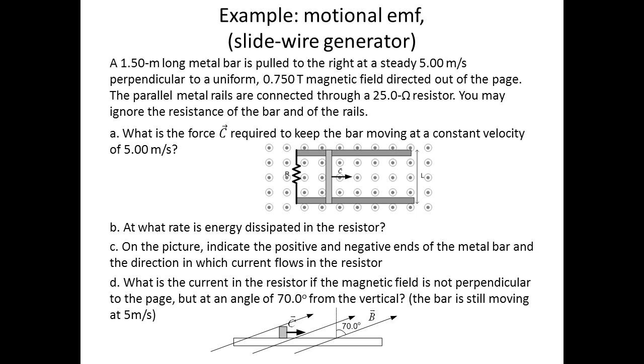On the picture, indicate the positive and negative ends of the metal bar and the direction in which current flows in the resistor. And what is the current in the resistor if the magnetic field is not perpendicular to the page but at an angle of 70 degrees from the vertical?